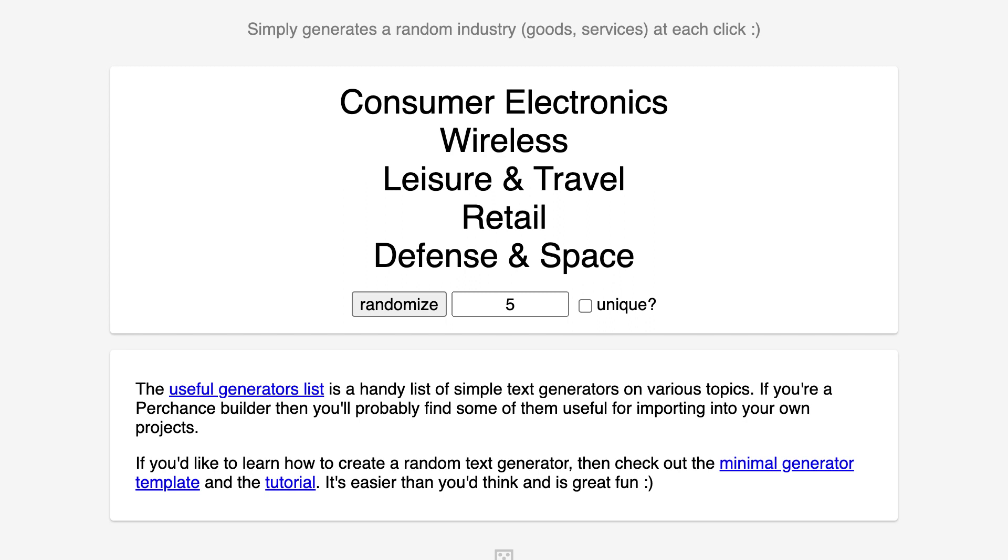So here's the app idea for today, which I found in five minutes. People, it's so easy to come up with app ideas. Here's what I did. I went to my favorite random industry generator on perchance.org, input the number five to tell it to give me five random industries. And the five that it came up with were consumer electronics, wireless, leisure and travel, retail, and defense in space. I did not pick defense in space. I went with retail.